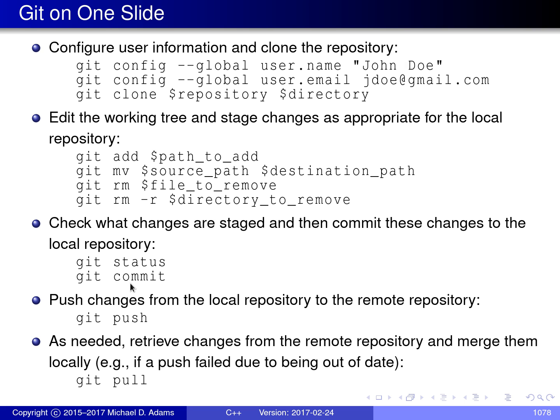Once changes are propagated to the local repository, the user will often want to push changes to the remote repository using git push. Sometimes a push will fail because other changes have been committed to the remote repository since the last synchronization, making the local repository out of date. In that case, the user would perform a git pull, or a git fetch followed by a git merge, to retrieve the changes made to the remote repository since last synchronized, after which the push can proceed.